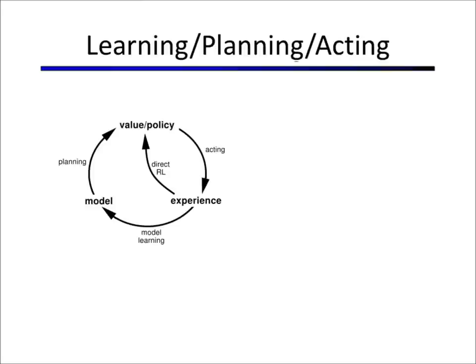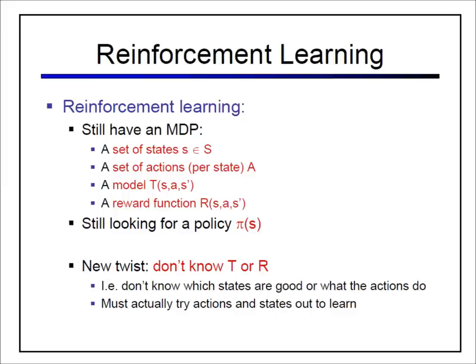Think of a baby who is just born. They want to increase their reward — clean diaper, milk, sleep. But they don't know which of their actions lead to good reward and which do not. They don't know which action changes what in the world. Their problem is to learn the model of the world while trying to maximize their reward. This is the reinforcement learning problem. The model again has states, actions, a transition model, and a reward model — and we are still looking for the policy.